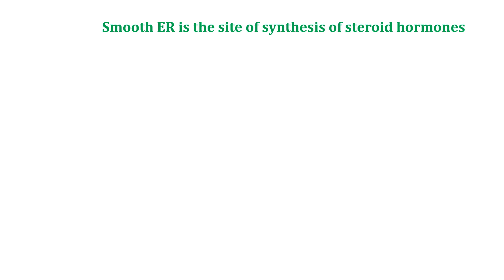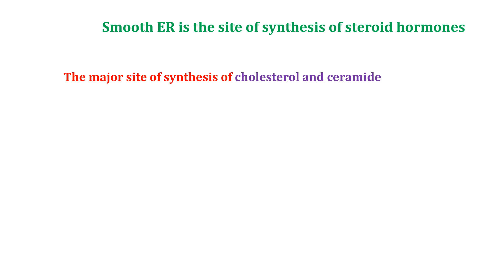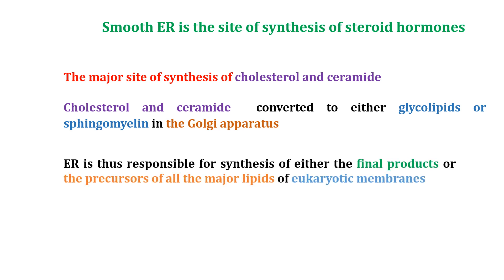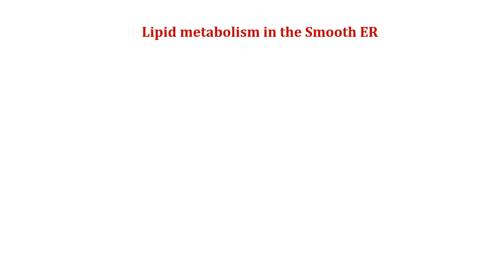The smooth ER is also the site of synthesis of steroid hormones. In addition to its role in synthesizing glycerophospholipids, the ER is also the major site of synthesis of cholesterol and ceramides. Cholesterol and ceramides are converted to either glycolipids or sphingomyelin in the Golgi apparatus. The ER is therefore responsible for the synthesis of either the final products or the precursors of all major lipids of eukaryotic membranes.